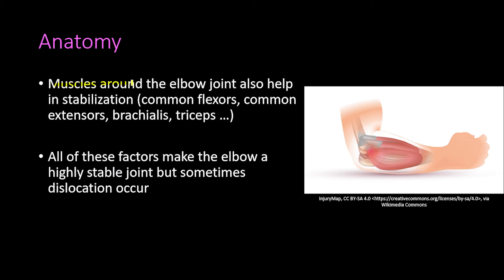Muscles around the elbow joint also help stabilize it. These include the common flexors originating from the medial epicondyle, the common extensors from the lateral epicondyle, and muscles like the brachialis and triceps. All of these factors together make the elbow a highly stable joint, but sometimes dislocation still occurs.